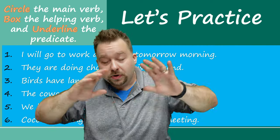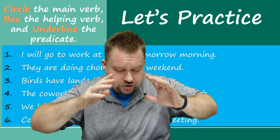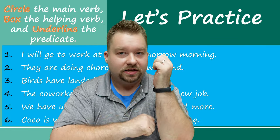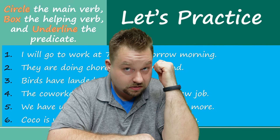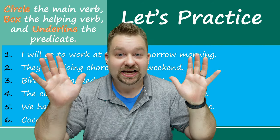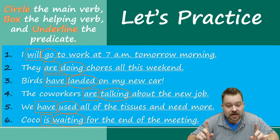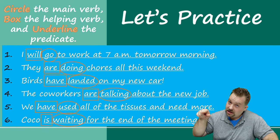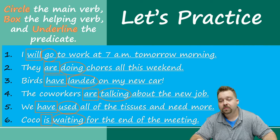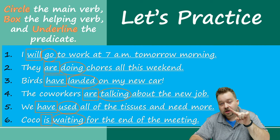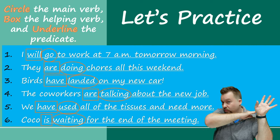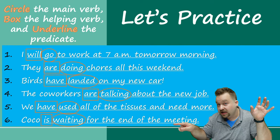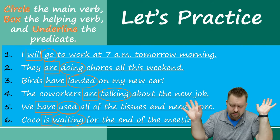Now I am sure that you paused the video and you have your answers ready. Let's check. Circle the main verb, box the helping verb, and underline the predicate. Number one: I will go. 'I' is the subject, so 'will go' is the predicate — we underline that.